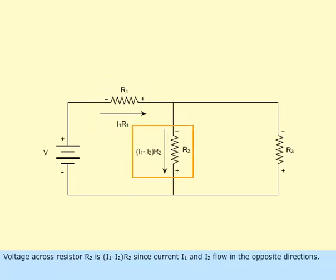Voltage across resistor R sub 2 is I sub 1 minus I sub 2 times R sub 2 since current I sub 1 and I sub 2 flow in the opposite direction.